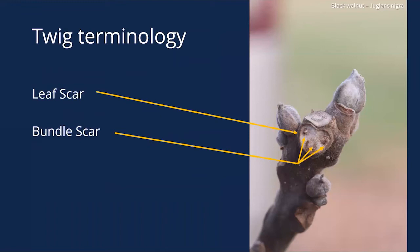Leaf scars on a twig show where leaves were previously attached. Once they fall off, they leave a scar that's very consistent across a particular species and commonly used to identify trees. Inside the leaf scars are bundle scars — where the plumbing of the leaves connected to the twigs — and these sometimes form recognizable patterns that help with identification.